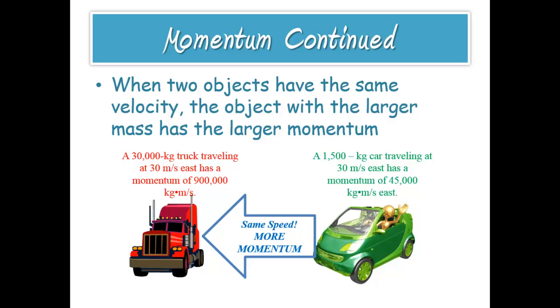All right. So just some other information. Momentum, a little bit more. When two objects have the same velocity, the object with the larger mass has a larger momentum. Kind of makes sense. Gave you two objects here to kind of show you. A 30,000 kilogram truck traveling at 30 meters per second east has a momentum of 900,000 kilograms meters per second. And you have this little smart car here that is 1500 kilograms traveling at the same speed, still traveling at 30 meters per second east, has a momentum of 45,000 kilograms meters per second. So notice heavy semi truck, lots more momentum.